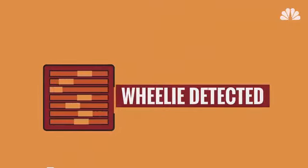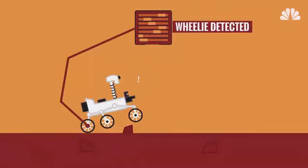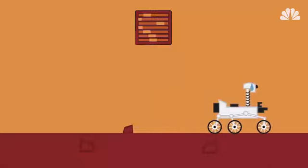When the algorithm detects a wheelie, it works to adjust the speed of the other wheels until the wheel in the air slowly moves back down to the ground.